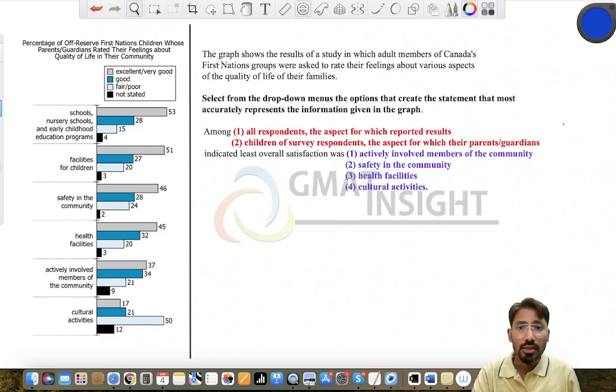The graph here shows the results of a study in which adult members of Canada's First Nations groups—so only the adult members—were asked to rate their feelings about various aspects of the quality of life of their family. That's given. Now this is the standard line that most of the questions of graph actually give.